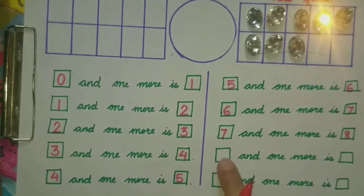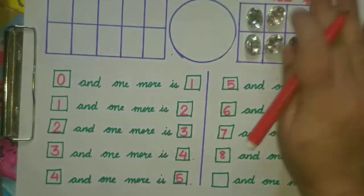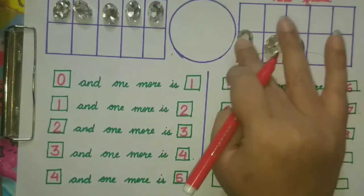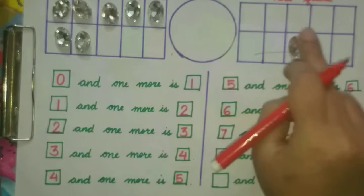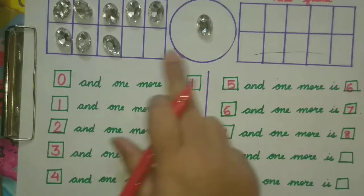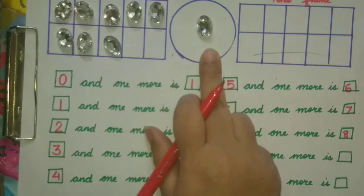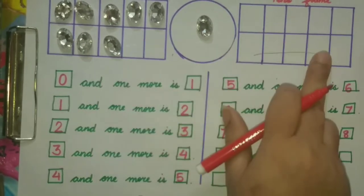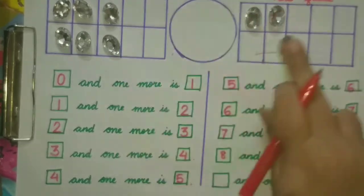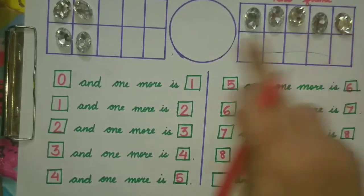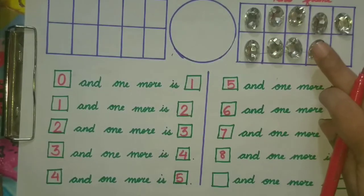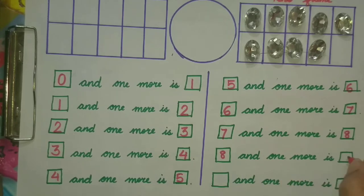Now our next question will be 8. We will bring this 8 here. Now we have 8 items. 8 and 1 more — to find out, we will again bring them to the second ten frame and arrange them here: 1, 2, 3, 4, 5, 6, 7, 8, 9. So 8 and 1 more is 9.